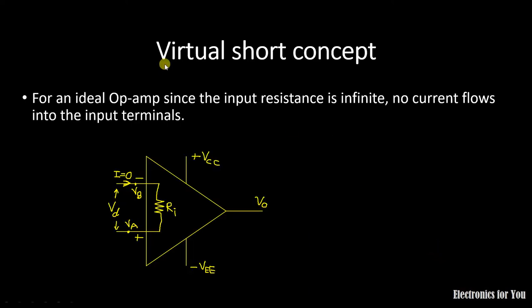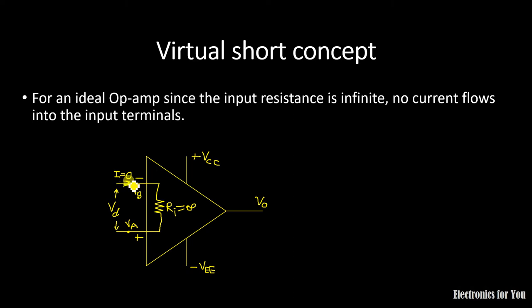Now let us move toward the main topic: the virtual short concept. For an ideal op-amp, the input resistance Ri has a value of infinity. As shown in the picture, Va is the voltage at the non-inverting terminal. When current tries to pass, it will not actually conduct because this resistance is infinite, and therefore I is equal to 0.